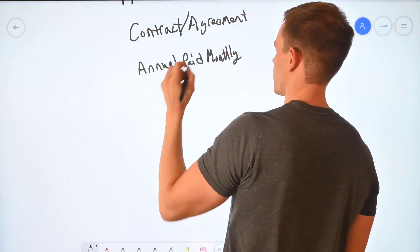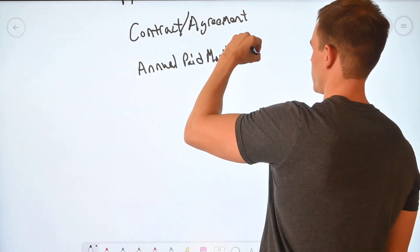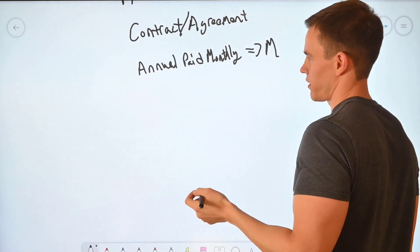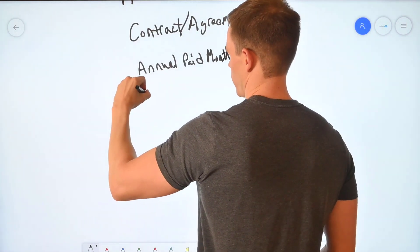So you'll run into this scenario again where you have these various commitment terms. So annual paid monthly, you're likely to continue to write down or sync to a monthly contract or monthly agreement.